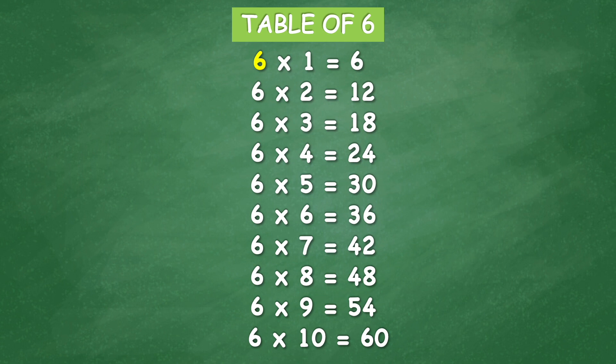Table of 6: 6 times 1 equal 6, 6 times 2 equal 12, 6 times 3 equal 18, 6 times 4 equal 24, 6 times 5 equal 30.